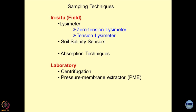Moving on to sampling techniques, these are broadly classified into two groups: in situ (field) and ex situ (laboratory) techniques. For in situ field conditions, lysimeters are used — setups designed for measuring discharge or percolation in the soil mass. The word 'lysi' corresponds to seepage or percolation, so a lysimeter is a system that measures percolation in the soil mass.